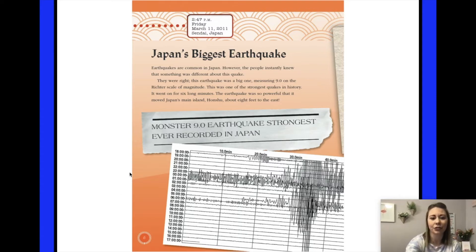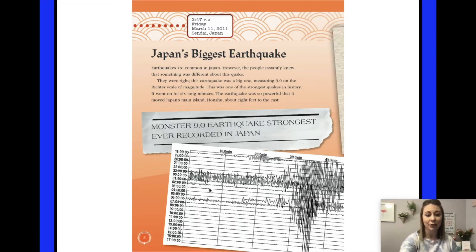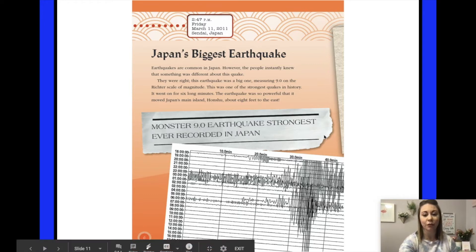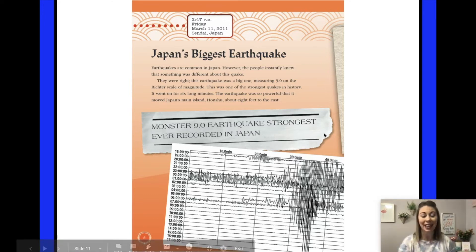The picture says: 'Monster 9.0 earthquake — strongest ever recorded in Japan.' We can see the smaller ones on the Richter scale and then all of a sudden it's huge, maxing out. It's so big.